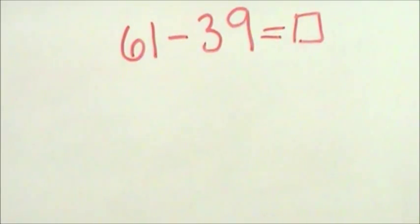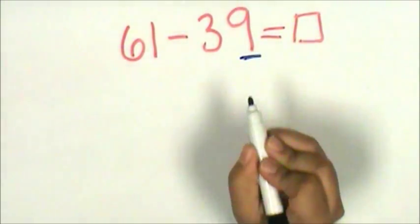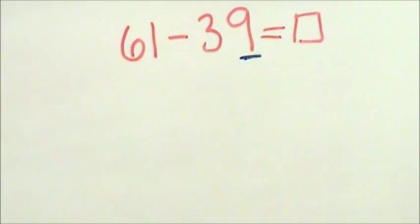Let's determine the difference of sixty-one minus thirty-nine. The first thing I see is the nine in thirty-nine. When there is a nine in the ones place, that means it is one away from the next decade of numbers. So thirty-nine and one more is forty.